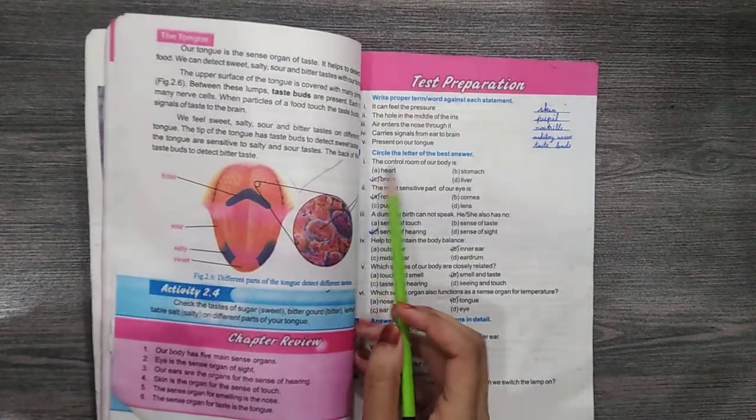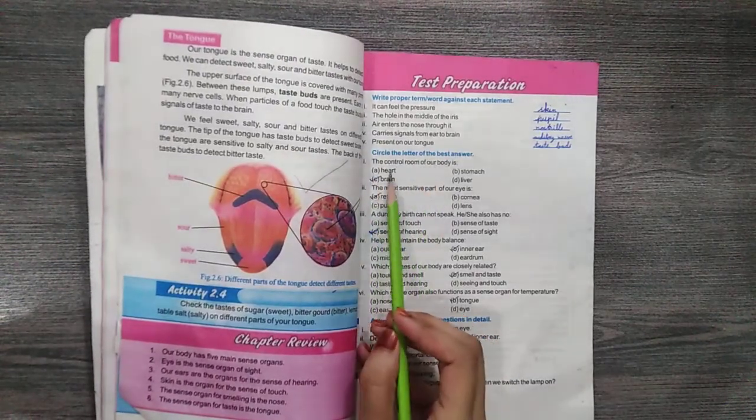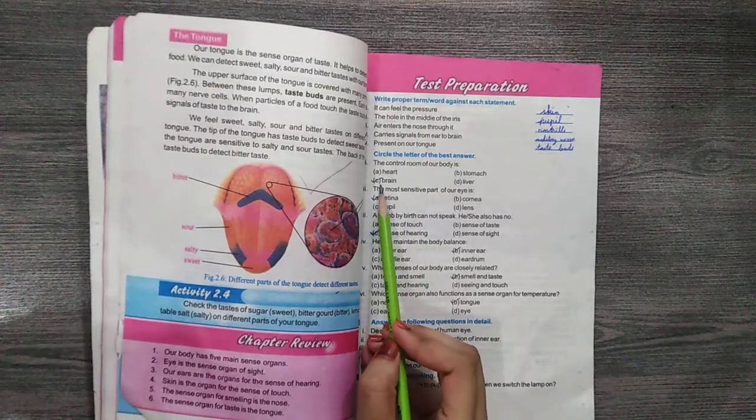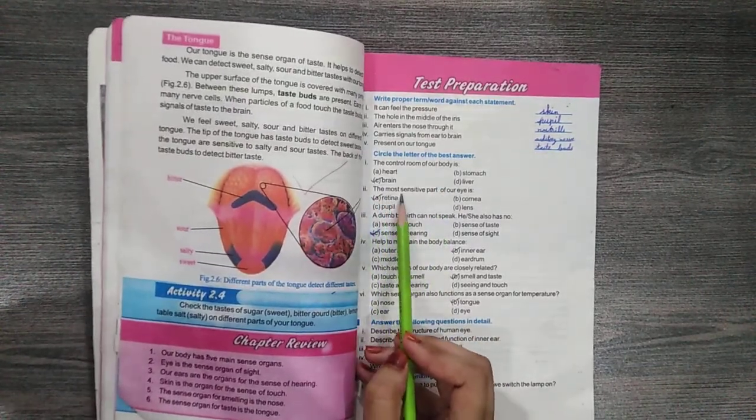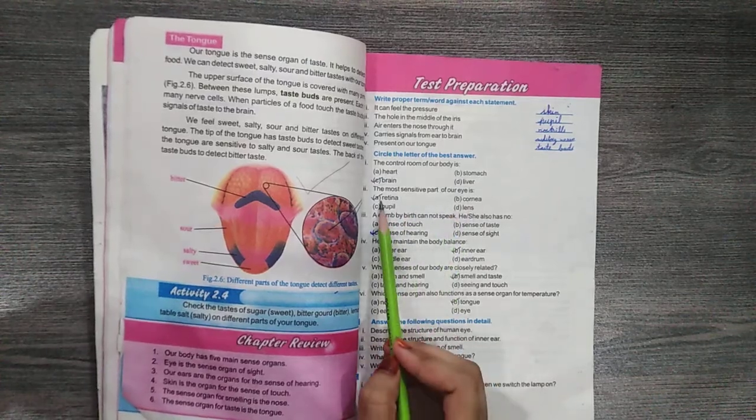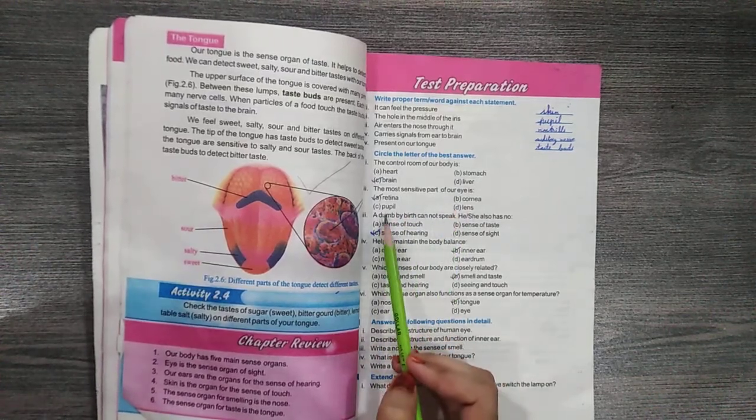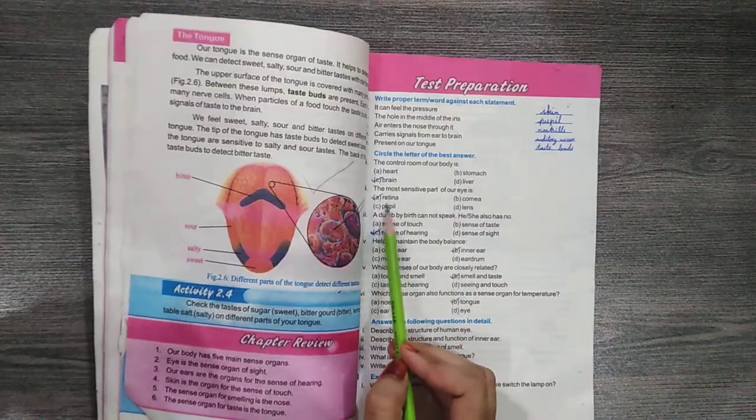MCQ: The control room of our body is A. Heart, B. Stomach, C. Brain, D. Liver - the answer is C. Brain. Question number 2: The most sensitive part of our eyes is A. Retina, B. Cornea, C. Pupil, D. Lens - the answer is A. Retina.